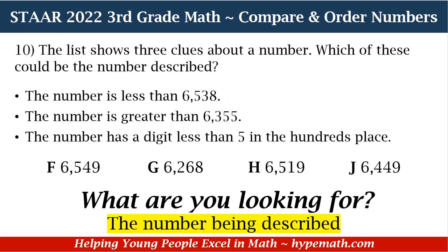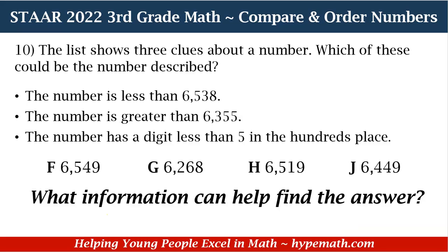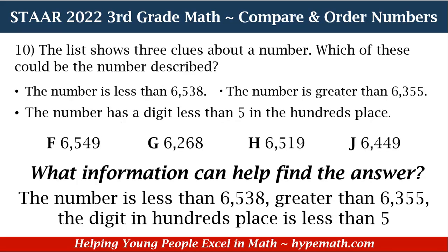We are looking for the number being described. What information can help find the answer? Our clues. The number we're looking for is less than 6,538 — meaning the alligator mouth would open up to 6,538 because the other number is smaller. But the number is also greater than 6,355. And lastly, the digit in the hundreds place is less than five.